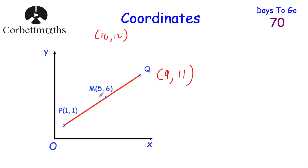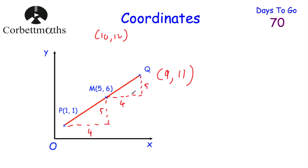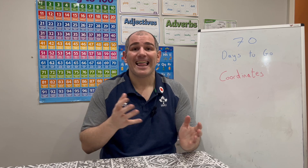Another way to solve this: to get from P to M, we go across four and up five. So continuing that same movement from M — across another four and up another five — we get to nine, eleven. So the coordinates of Q are nine, eleven. That's it — two methods, same answer.